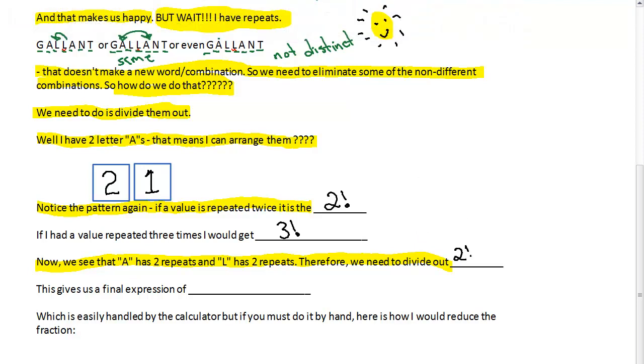For the two A's, I have two factorial, and for the two L's, I have two factorial. And while 'and' a lot of times means add, this 'and' is actually going to be multiply. And this gives us a final expression of seven factorial divided by, in parentheses, two factorial times two factorial, in parentheses. Or seven factorial over two factorial, two factorial. The parentheses are really important if you're entering it into a calculator.